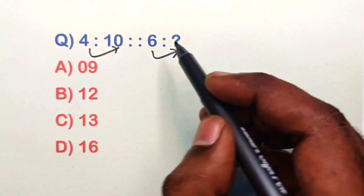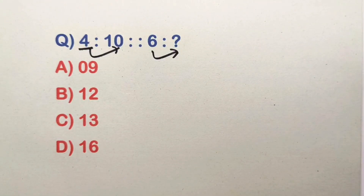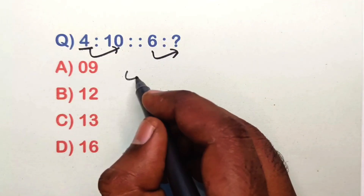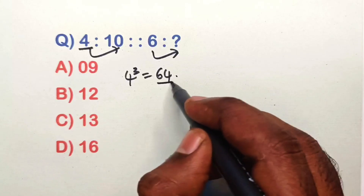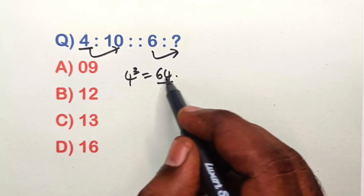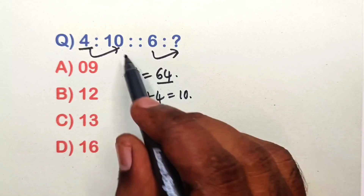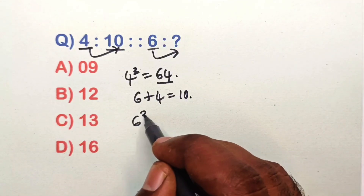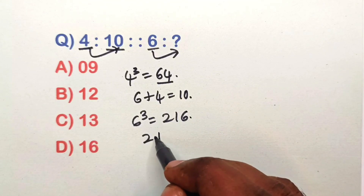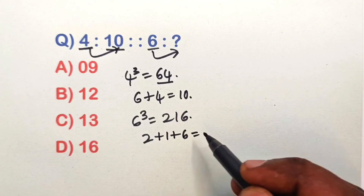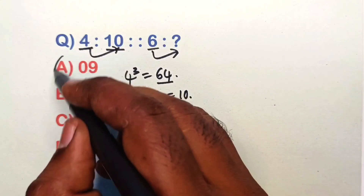Find the relation in this analogy question. Take 4: 4 cubed is 64 — add digits: 6 plus 4 equals 10. Same way, 6 cubed is 216 — add digits: 2 plus 1 plus 6 equals 9. Option D is the correct answer.